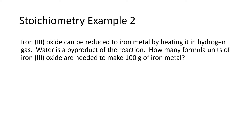We first have to have a balanced equation, so the first thing we need to do after reading this problem is figure out how to write that equation. It says iron three oxide can be reduced to iron metal by heating it in hydrogen gas; water is a byproduct of the reaction. How many formula units of iron three oxide are needed to make 100 grams of iron metal? This is a stoichiometry problem because we are given a number with iron as the chemical and asked to find a number where iron three oxide is the chemical — we're changing chemicals.